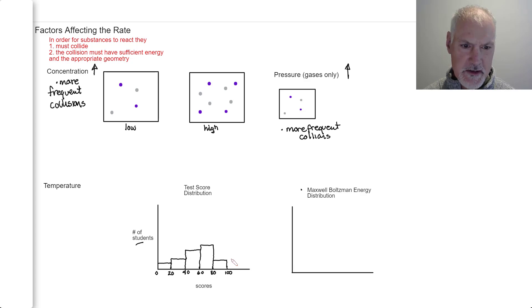In a Maxwell-Boltzmann energy distribution, it's not scores we have, but the kinetic energy of the particles. And on this side, we have a number of particles that have that kinetic energy. We don't use blocks, but rather draw it as sort of a smooth curve. So this would represent the distribution of kinetic energies that my particles have.